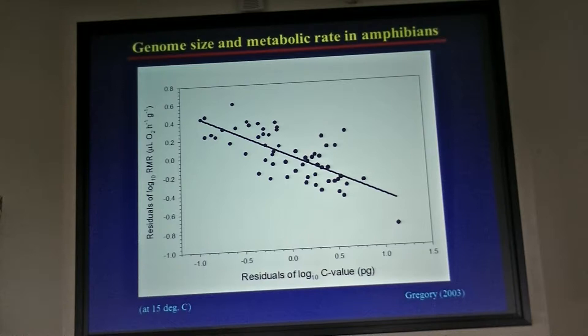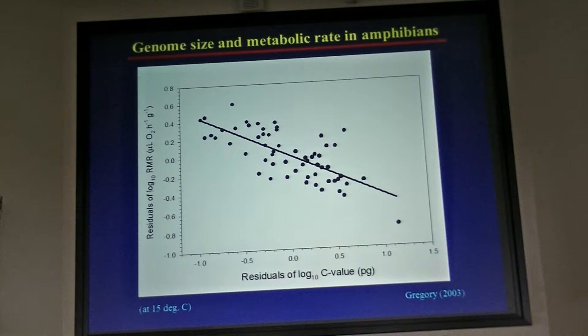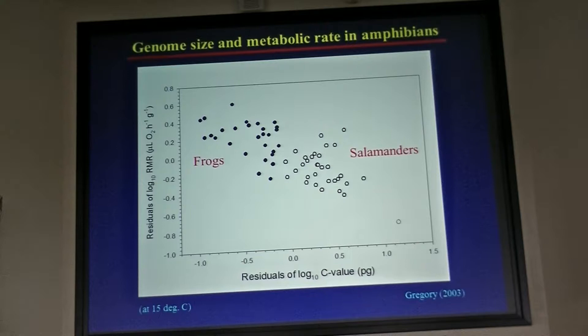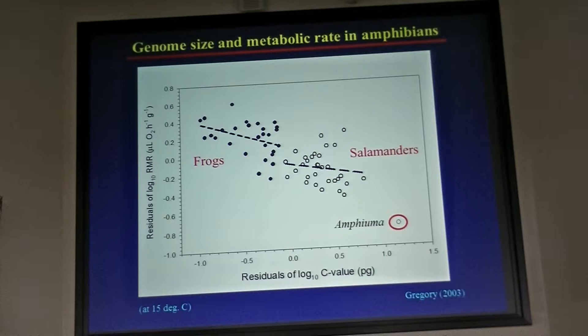People have tried to use the same metabolic constraints explanation for amphibians. If you look at temperature-controlled, mass-corrected metabolic rate and oxygen consumption versus genome size across all amphibians, you do find a significant negative correlation. The problem is this is a classic example of why you need phylogenetic correction — it's really just two big clusters of points, two major clades. Within frogs and within salamanders, the relationship is not very strong, if even non-significant. In salamanders it's significant, but only if you include the extreme case of amphiuma.